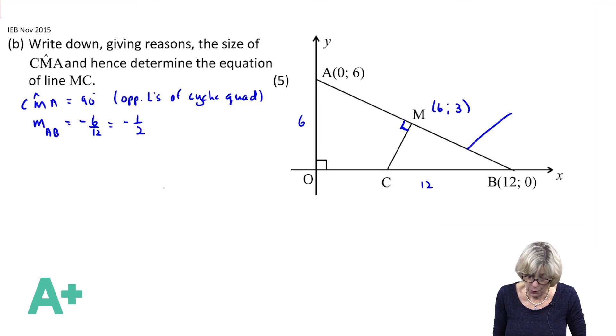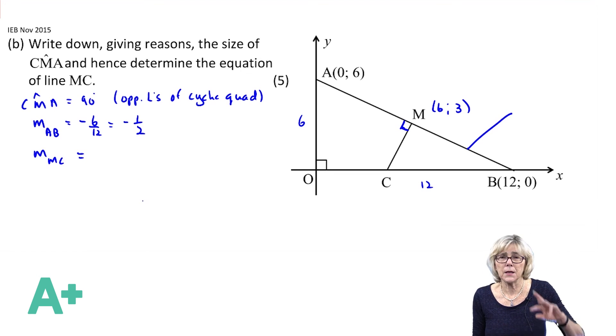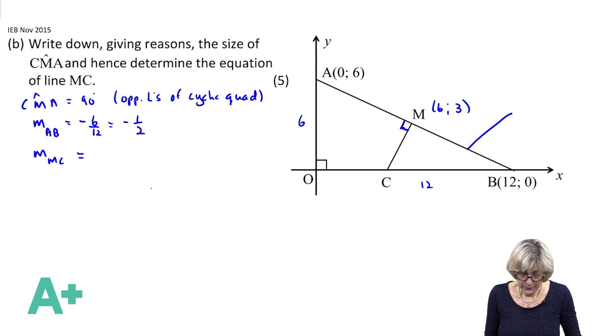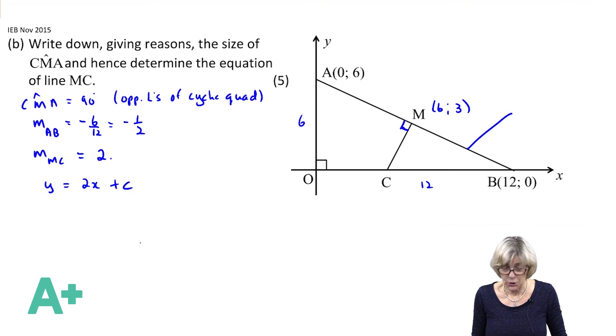Therefore the gradient of MC, because it's perpendicular, is going to be the inverse - in other words the opposite sign and the reciprocal. So I get it to be a positive, yes it's running positive, and I get it to be 2. So now we have y = 2x + c.